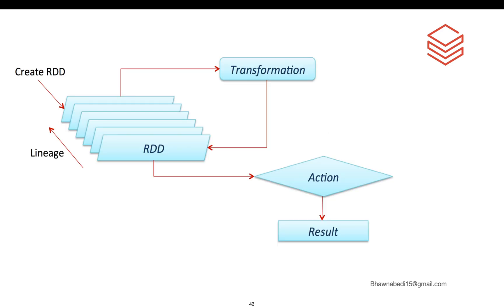Everything underlying in Spark is an RDD. Even if you write code in the form of a data frame, it is nothing but an RDD. If you apply any filter, group by, or unions - all these are transformations. You apply these transformations on RDDs or data frames and create a new RDD. The moment you call an action, all the set of RDDs you have created by doing joins and filters will get executed and then you get the results. This is the whole picture of transformation and action.